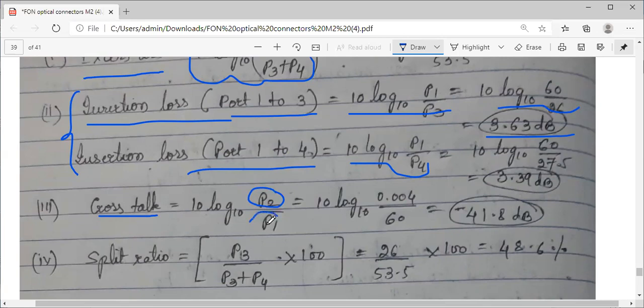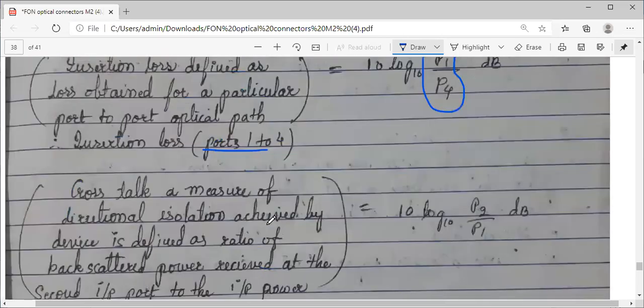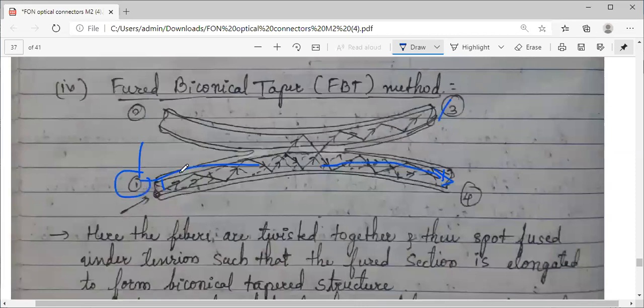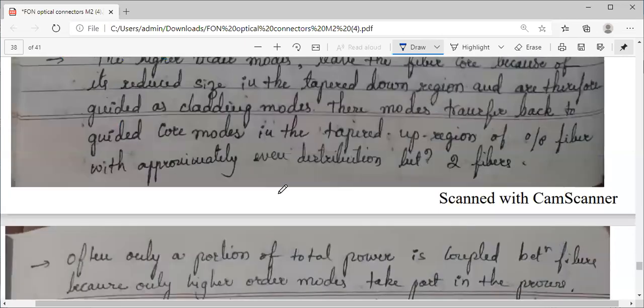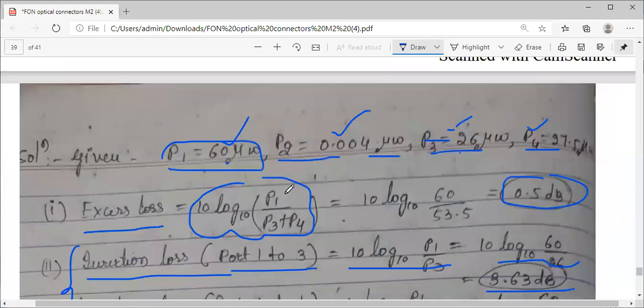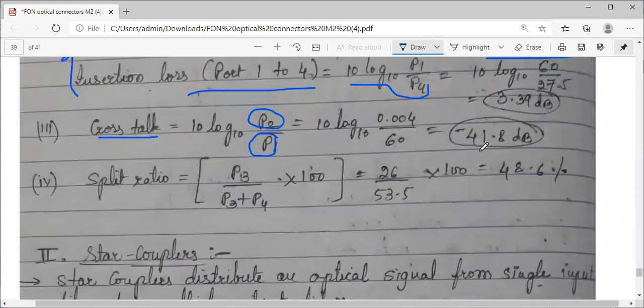Coming to crosstalk: the back scattered power in the second port with respect to that input applied in P1. Some is distributed in three and four, so some back scattered reflected power will go into port two. That loss crosstalk is P2 by P1, calculate the value, you will get about 41.8 decibels.